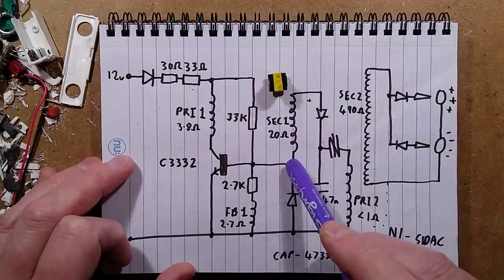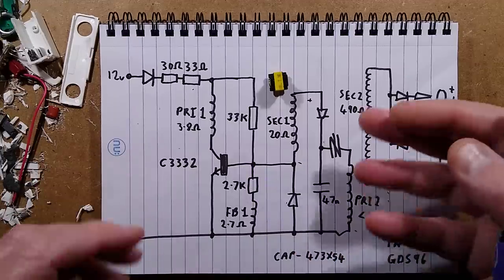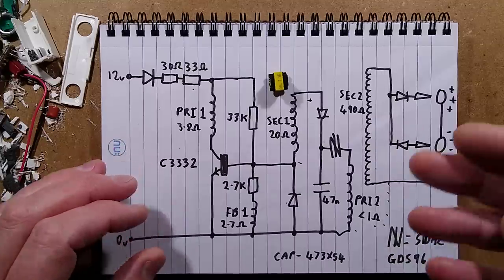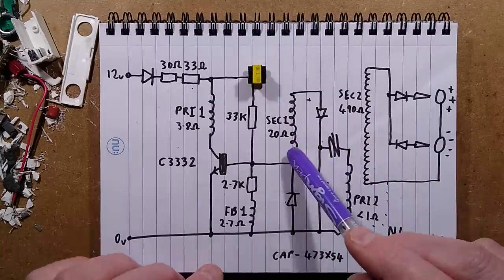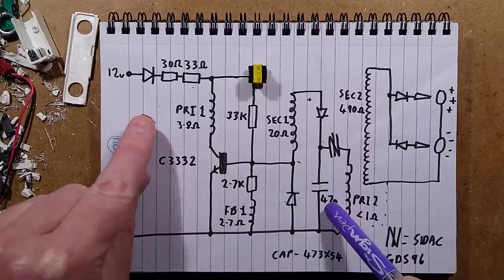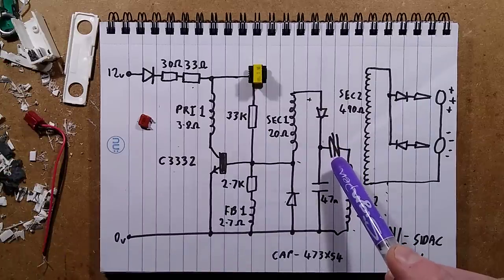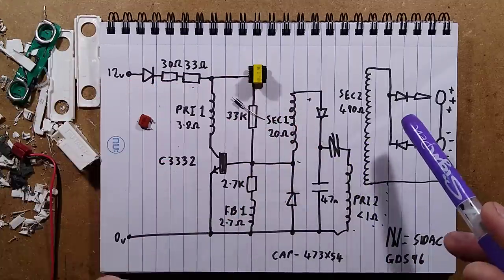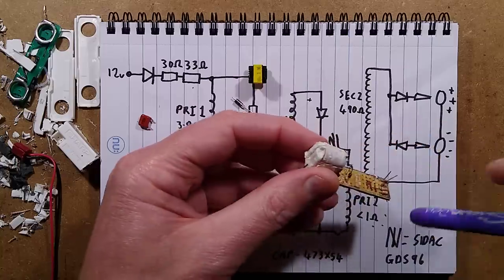Current starts flowing through the primary due to biasing from this resistor. As soon as that happens, the feedback induces current into the winding and turns the transistor on harder until it reaches the saturation point, then it turns off and collapses. I'm not sure why the secondary is attached to the base of this transistor. Patreon supporters may be getting deja vu. When I was initially reverse engineering this, I showed them a preview video and got their input because some of this circuitry was very odd.